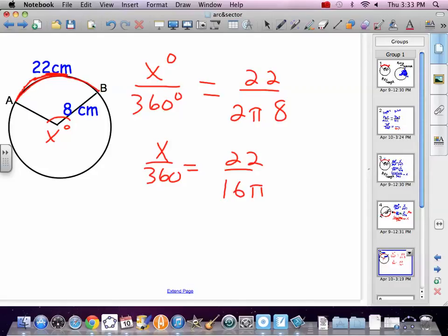Alright. So x over 360 equals 22 over 16 pi. Again, cross multiply. But again, do we really want to bring the 16 pi up? No, we don't. Because we just have to take it down later. Do we want to take the 360 up? Definitely. x equals 22 times 360. That's just a little random dot there. Over 16 pi.